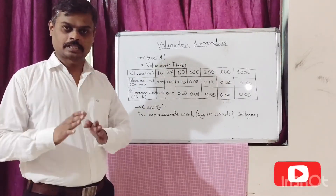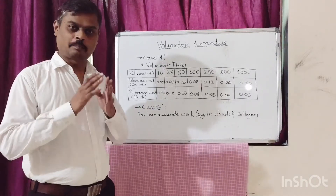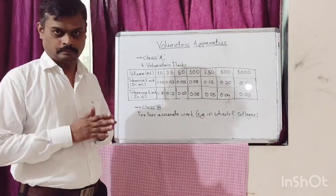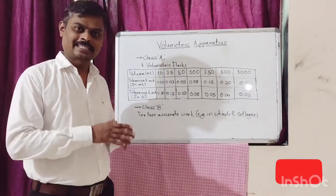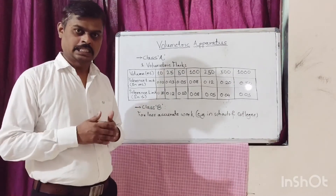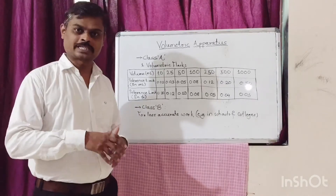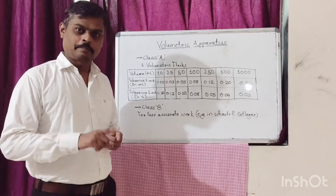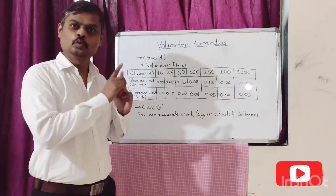The second type of volumetric apparatus is Class B. Class B volumetric apparatus are not recommended for quantitative analysis; these apparatus are generally recommended for less accurate work. They are generally used in schools and colleges for demonstration purposes. Class B apparatus require in-house calibration before putting them into use.